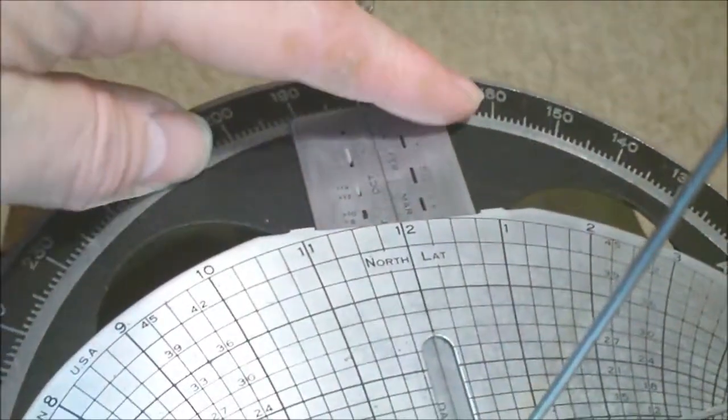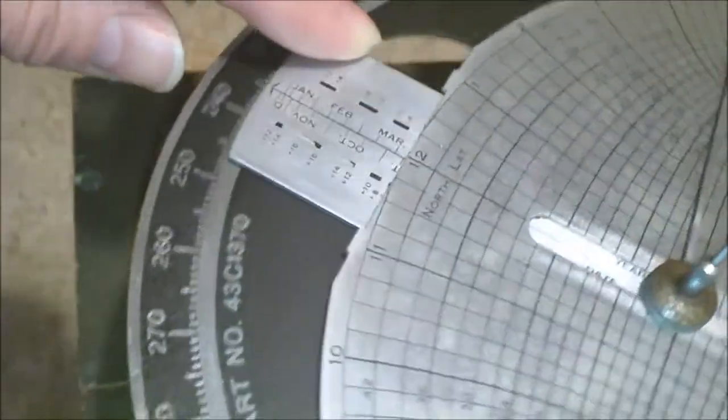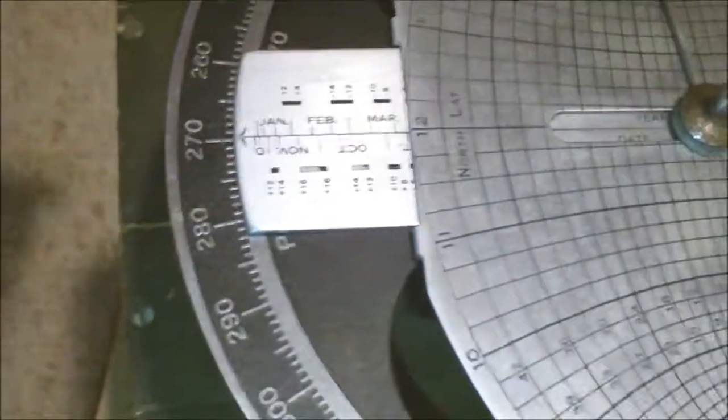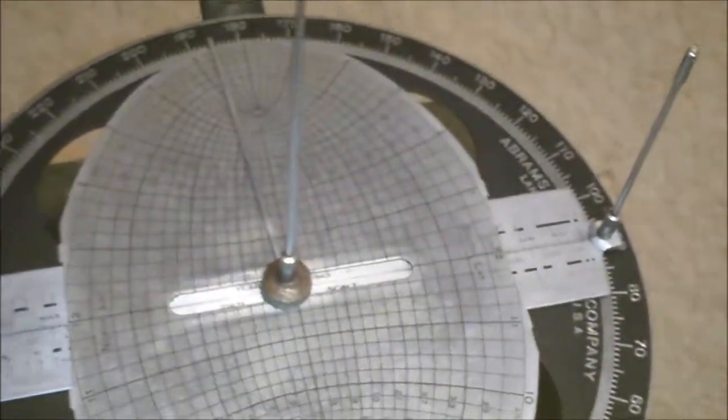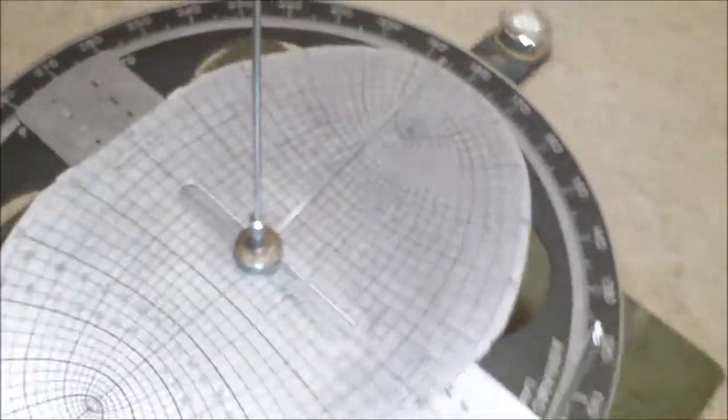If we wanted to go in a different direction, we'll say 270 degrees, we just move the date bar so that the arrow is pointing to 270. And then we move our vehicle so that once again we line up the two gnomons with Polaris, like so.